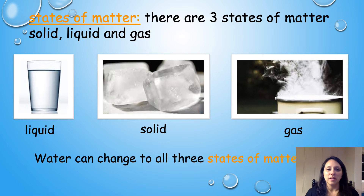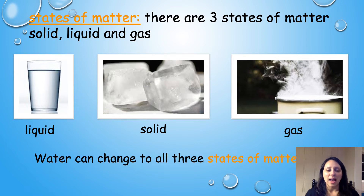States of matter. There are three states of matter: solid, liquid, and gas. Take a look at the pictures below. There's a picture of a glass of water — that state of matter is liquid. The next picture is a solid; it's water that's frozen, so it's ice. And the last picture shows the gas state of matter — it's water that is evaporating, turning to gas.